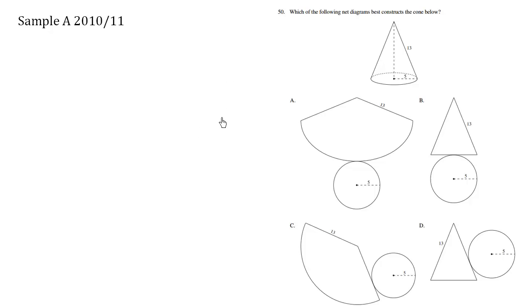Which of the following net diagrams best constructs the cone below? Now this here is a cone and we're going to cut it so that it opens up to be one of these shapes.